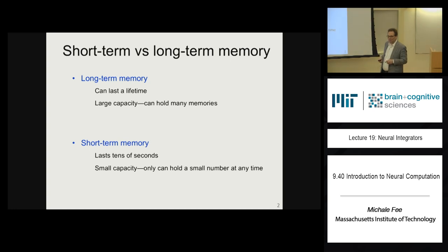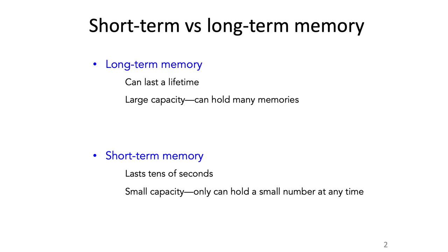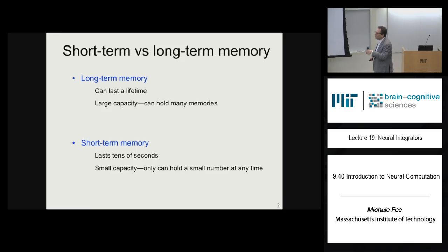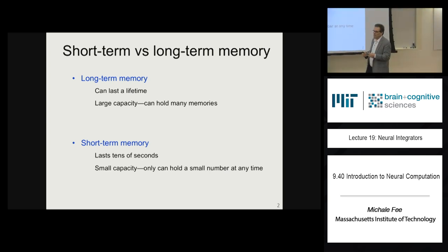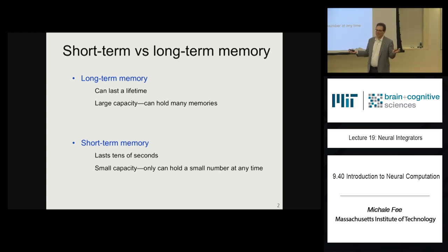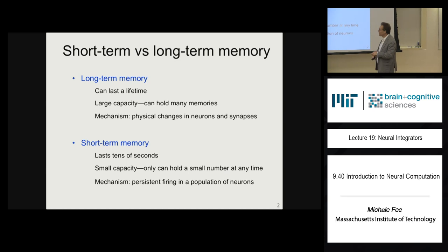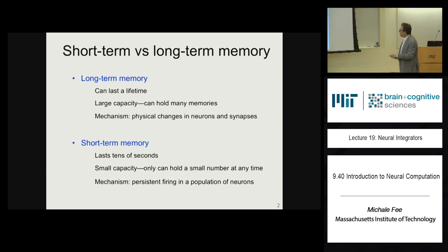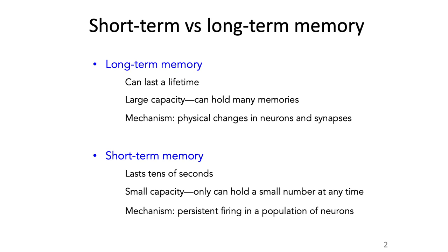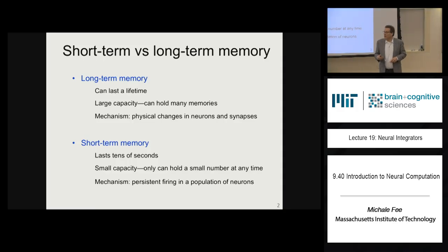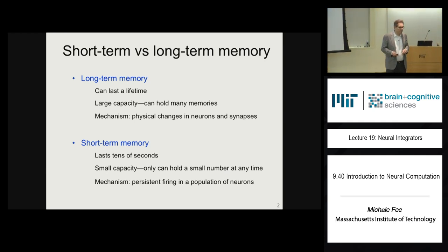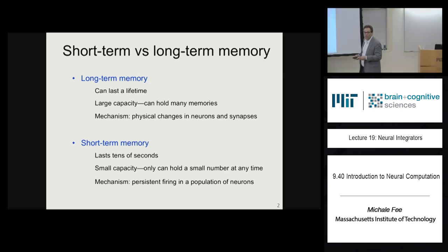In the old days, you would look a number up in the phone book and remember it long enough to type it in. Whereas long-term memories have very large capacity — basically everything you remember about your work and your classes for your entire life, not just until the final exam. Short-term memories are thought to have an underlying biophysical mechanism of persistent firing of neurons in a particular population, whereas long-term memories involve physical changes in neurons and primarily in the synapses that connect neurons.